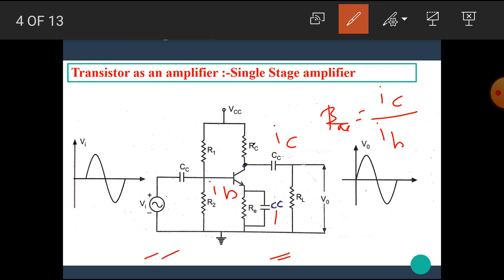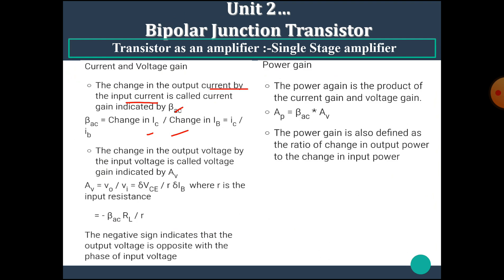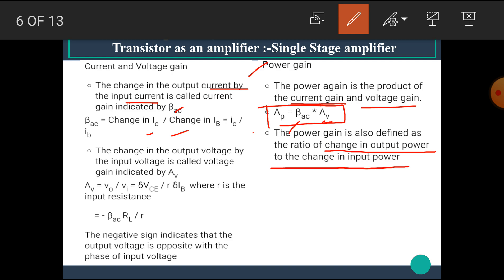Similarly, the voltage gain can be calculated as V0 upon VI. The power gain is the product of current gain and voltage gain. The current gain is beta AC and the voltage gain is AV. Hence, power gain is defined as the product of beta AC into AV, that means current gain into voltage gain. The power gain is also defined as the ratio of change in output power to the change in input power.